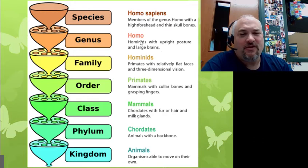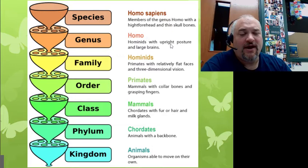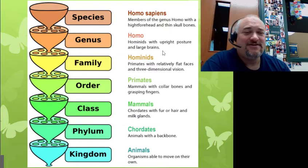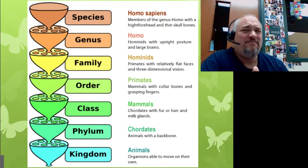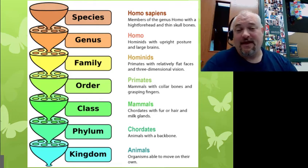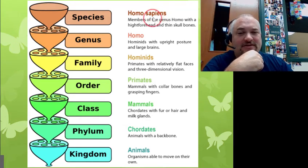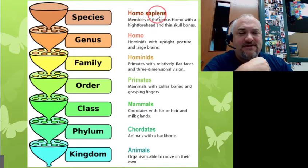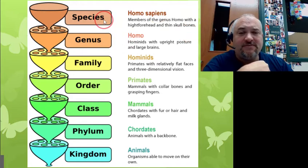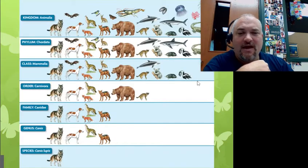Hominids can be broken down into even smaller groupings — our genus is Homo, which means walking upright with large brains. Sasquatch and Yeti might be Homo, or they might be hominids — we don't have a specimen so we can't say. Our species is sapiens. Homo is our genus, sapiens is our species name, so scientific names come from your genus and species put together.